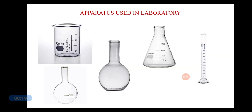Here you have some flasks, a beaker, and a measuring cylinder. A beaker is made of glass and is available in different sizes. It is used for preparation and keeping of solutions. This is a 100 ml beaker with markings that allow you to measure chemicals accurately — for example, to make a 20 ml or 40 ml solution using the graduations on the beaker.